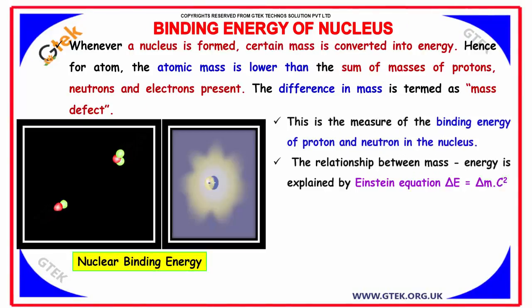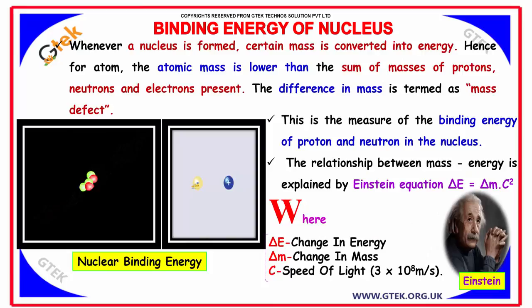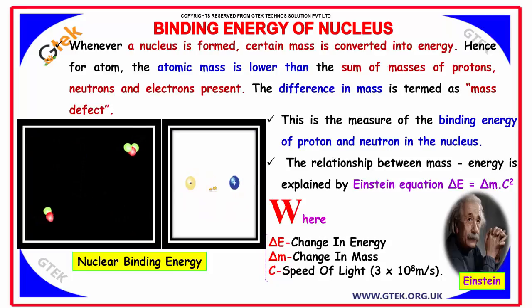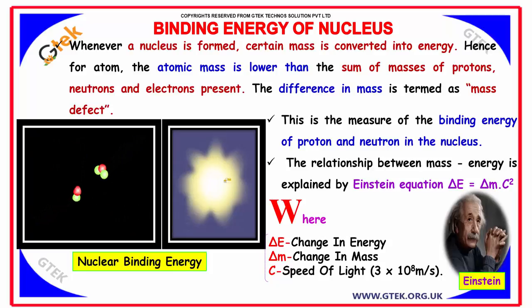Whenever the nucleus is formed, certain mass is converted into energy. Hence, for an atom, the atomic mass is lower than that of the sum of the masses of protons, neutrons and electrons present.